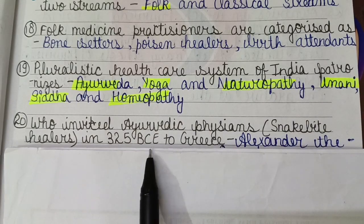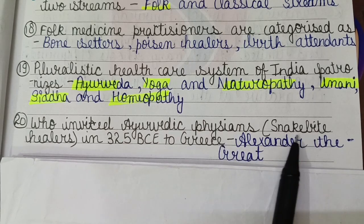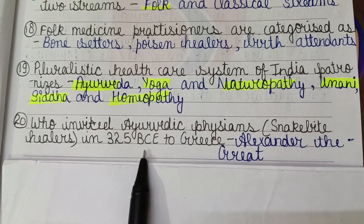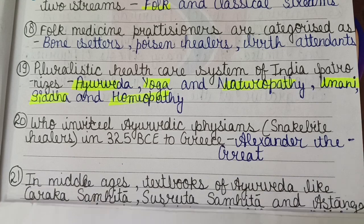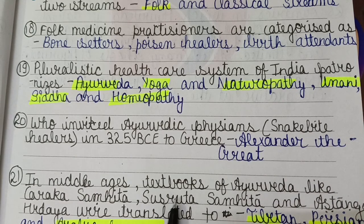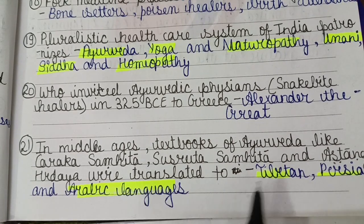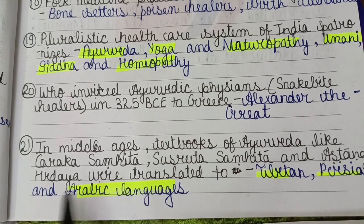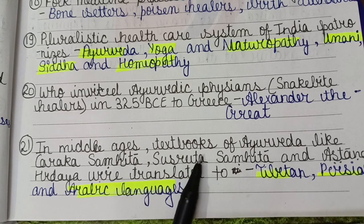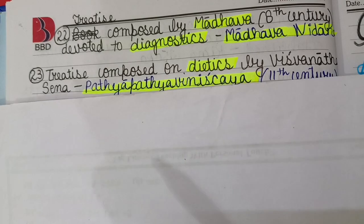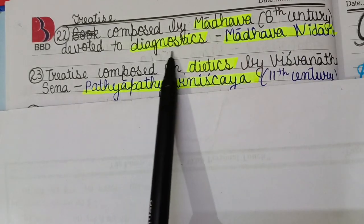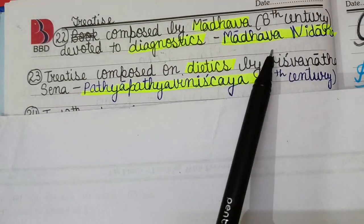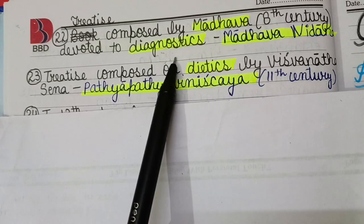Alexander the Great invited Ayurvedic physicians and snake bite healers to Greece in 325 BCE. In the middle ages, textbooks of Ayurveda like Charak Samhita, Sushrut Samhita, and Ashtanga Hridaya were translated into Tibetan, Persian, and Arabic languages. A treatise — meaning an essay — composed by Madhava in the 8th century devoted to diagnostics is known as Madhava Nidan.